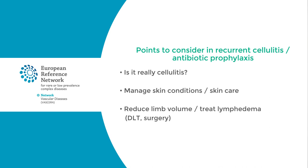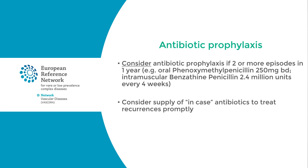When considering recurrent cellulitis and whether to use antibiotic prophylaxis, the main issue is to confirm that it's really cellulitis. Any skin conditions such as eczema should be managed, and it's important to use emollients to improve skin care and moisturisation. Reducing the limb volume and treating the lymphedema with decongestive lymphatic therapy, surgery, or other treatments is important as this reduces the chance of recurrence. If antibiotic prophylaxis is thought to be appropriate, we usually recommend this if there have been two or more episodes of cellulitis in a year. Antibiotics which can be used include oral phenoxymethyl penicillin, but in some countries intramuscular benzathine penicillin is preferred. It's also worth considering whether patients should keep a course of antibiotics at home to use promptly if they develop an episode of cellulitis.